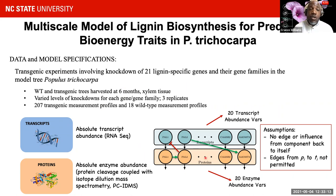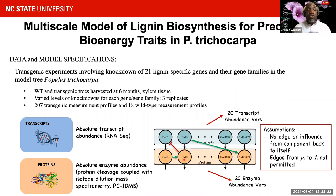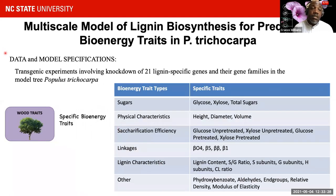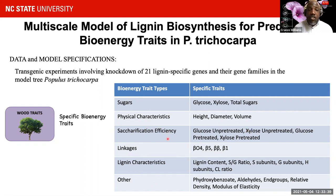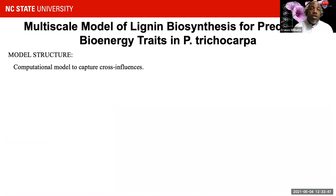Through the development of the model for these interactions, we made specific assumptions about the types of interactions that could occur, which helped constrain aspects of the model. We also had measurements from transcriptome experiments, including measurements of various bioenergy traits such as sugars, physical characteristics like height, diameter, and volume, saccharification efficiency, lignin characteristics like lignin content — totaling 25 traits in total.